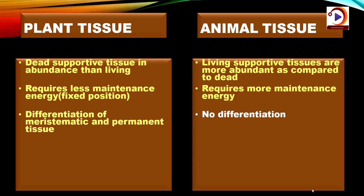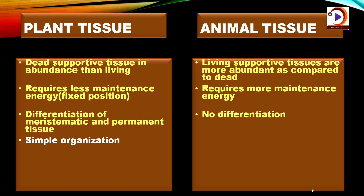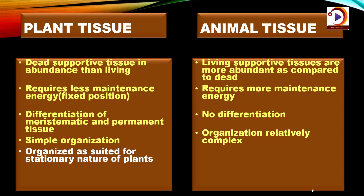Due to such differences in plants and animals, plant and animal tissues are categorized differently. Based on the dividing capacity of the tissues, various plant tissues can be classified as growing or meristematic tissue and permanent tissue. There is no such demarcation in animals. Plants are organized as suited for their stationary nature, while in animals they are organized based on locomotion, i.e. mobility.